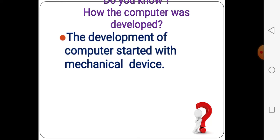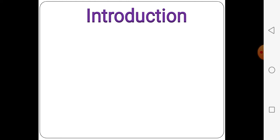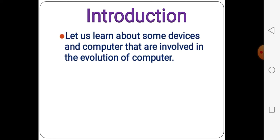Today, the development of computers started with a mechanical device and slowly they were improved to electronic computers that came into existence. From earlier, slowly they are going to improve. The first calculating device, how they are learning and existing. Today we are going to learn about devices and computers that are involved in the evolution of computer, one by one.